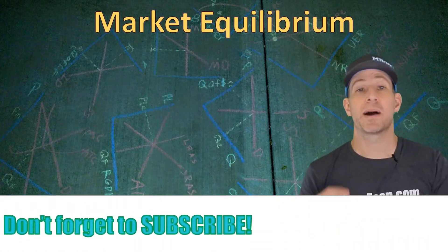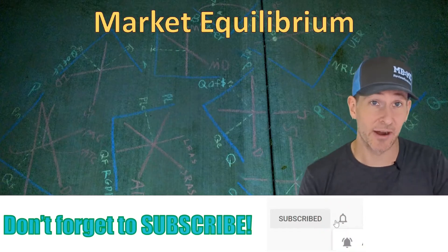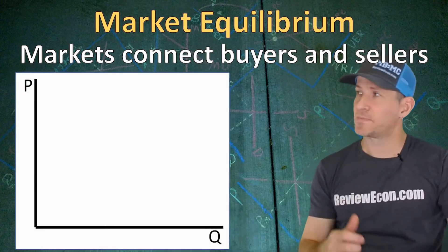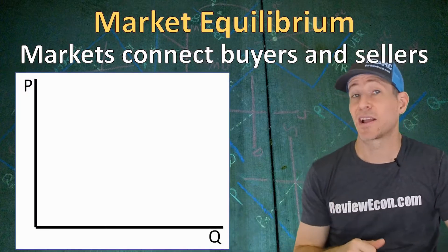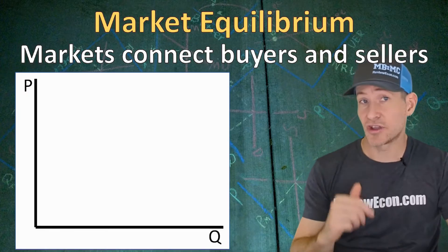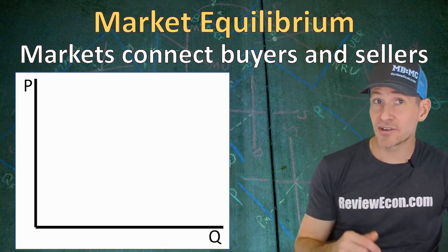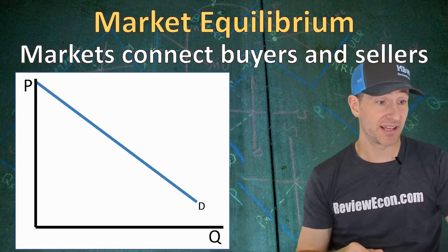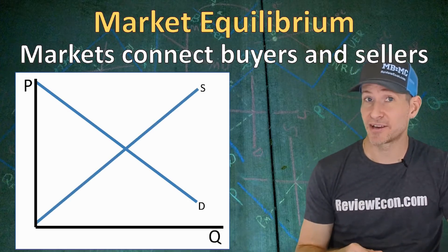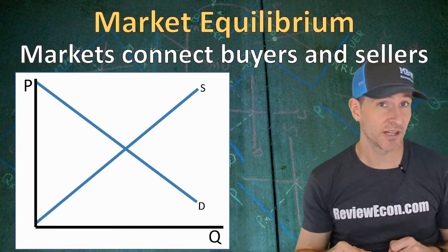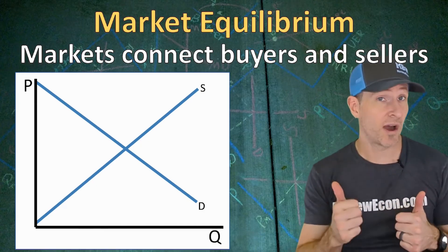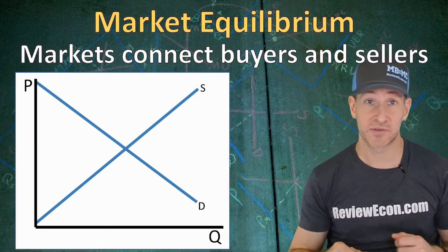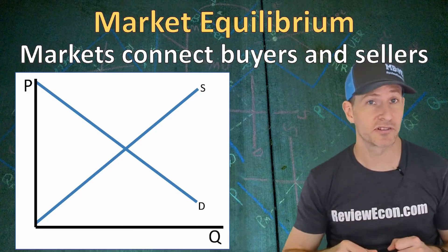First we're going to talk about market equilibrium. A market is anywhere that connects buyers and sellers. When we graph out a market in economics we put price on the y-axis and quantity on the x-axis — you can abbreviate those as P and Q. Buyers are represented as a downward sloping demand curve and sellers are represented as an upward sloping supply curve. That downward sloping demand curve shows the inverse relationship between price and the quantity consumers are willing to buy, and that upward sloping supply curve shows the direct relationship between price and the quantity producers are willing to sell.